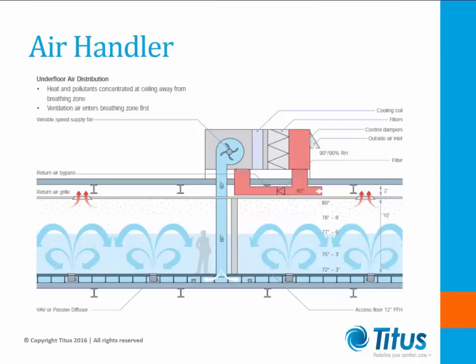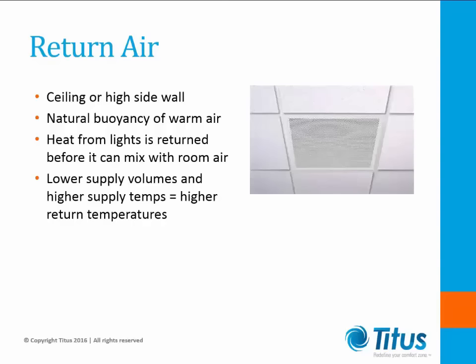So where does the supply air come from? It comes from an air handler, which could be located in an equipment room inside the building or on the roof. Cold supply air will be ducted into the UFAD plenum and return air will be ducted back to the air handler from the ceiling. In UFAD systems it's preferable to locate return grills in the ceiling or high side wall, taking advantage of the natural buoyancy of warm air to rise and exit the room. The higher supply air temperatures and lower supply air volumes in UFAD systems result in higher return air temperatures than those of conventional overhead systems.